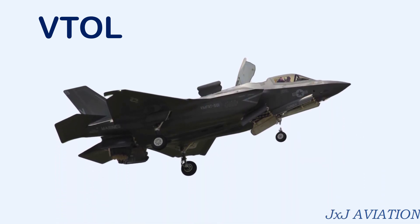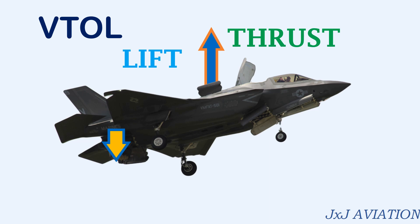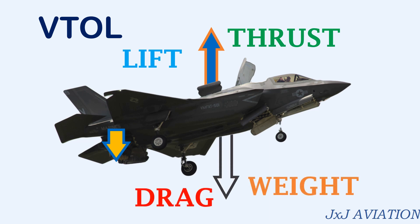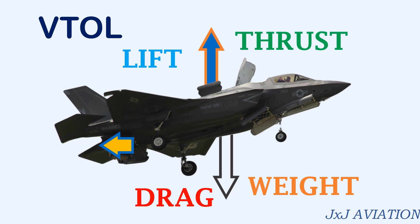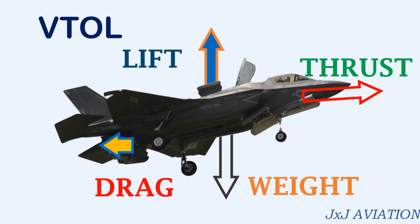If we consider a vertical takeoff or landing sequence of a fixed wing aircraft, the thrust force is acting upward, which is also providing the required lift on the aircraft. This is done by directing the jet exhaust downwards. By increasing or decreasing the thrust, the aircraft's height may be increased or decreased. The weight and the drag force will be acting downwards. For this aircraft to move forward, the jet exhaust is directed backward and the thrust starts to act in the forward direction. Now the lift force will be created by the wings which will act upward, and the drag force will act backward.